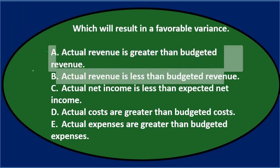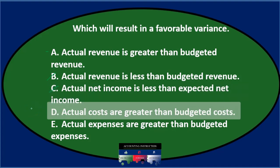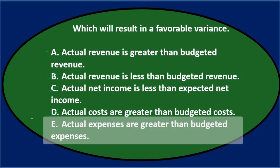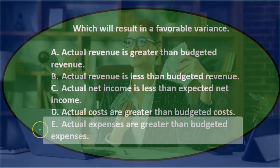B says actual revenue is less than budgeted revenue — if actual revenue is less than we budgeted, that seems unfavorable. C says actual net income is less than expected net income — that's not good, that's unfavorable. D says actual costs are greater than expected costs — the things we had to pay for are more than we thought, that doesn't sound good, that's unfavorable. And E says actual expenses are greater than budgeted expenses — we don't like expenses going over budget, so that's also unfavorable.